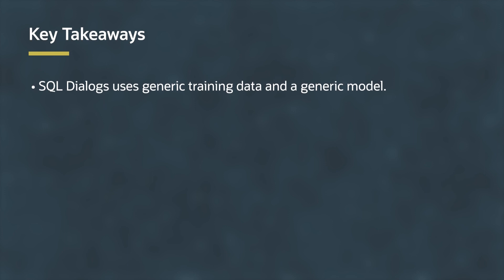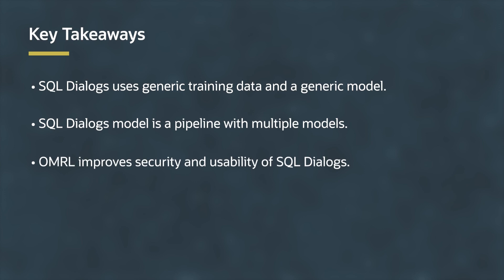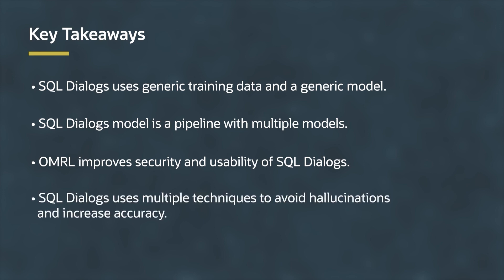To quickly recap: we use generic training data and a generic model as a foundation for the SQL Dialog model. Customers generally don't need to provide training data. The SQL Dialog model is a pipeline with multiple models that take the input utterance, use a parse tree, and generate intermediate steps, culminating in an OMRL step that gets converted into SQL. OMRL is very useful in ensuring the security aspects as well as the usability aspects of the SQL Dialog product. Finally, we have multiple techniques to avoid hallucination and increase accuracy, ensuring that the output is produced with high fidelity.